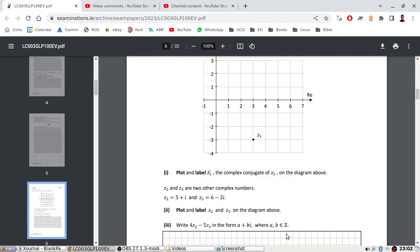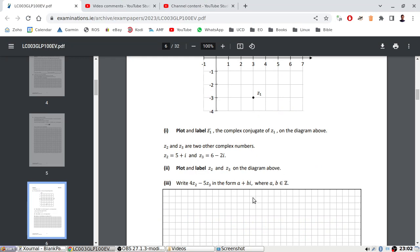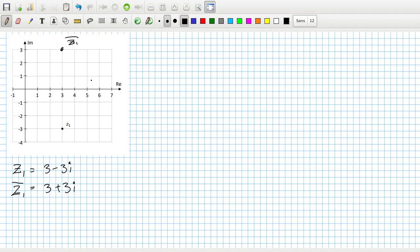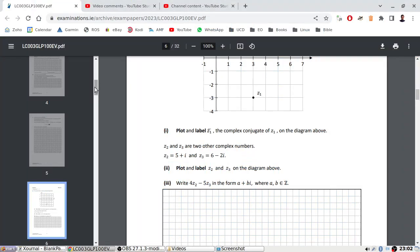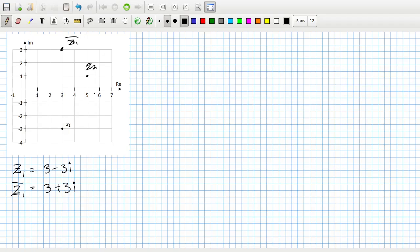Z2 and Z3 are two other complex numbers. Plot and label Z2 and Z3. 5 plus i, that's Z2. And 6 minus 2i, that's Z3.